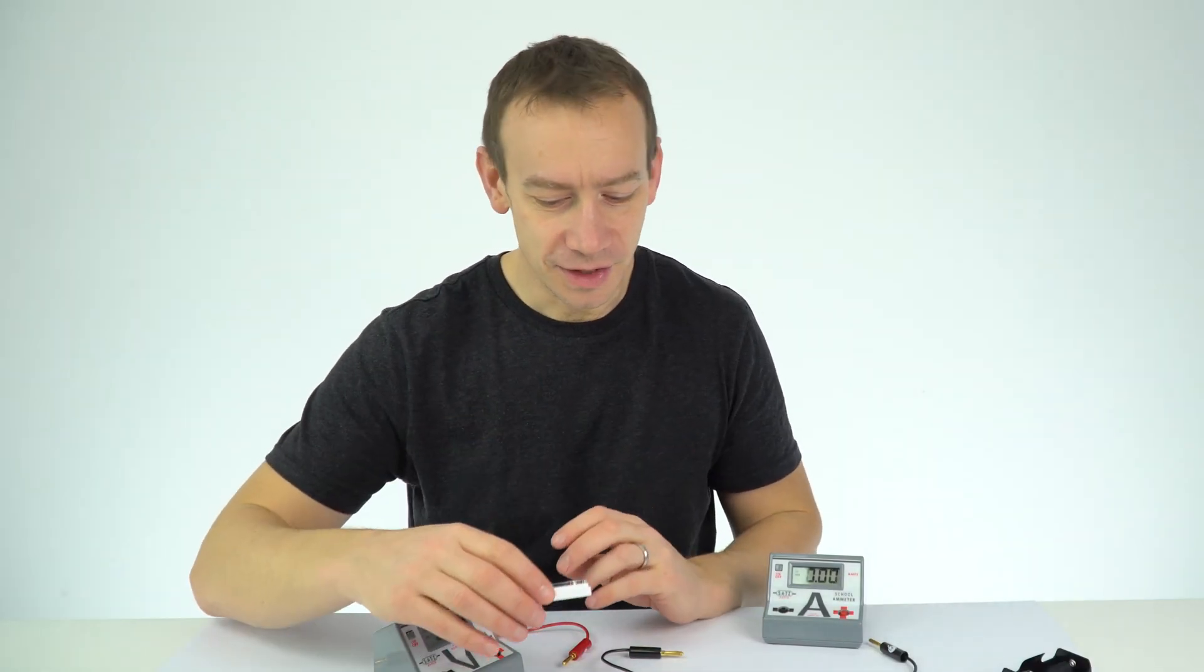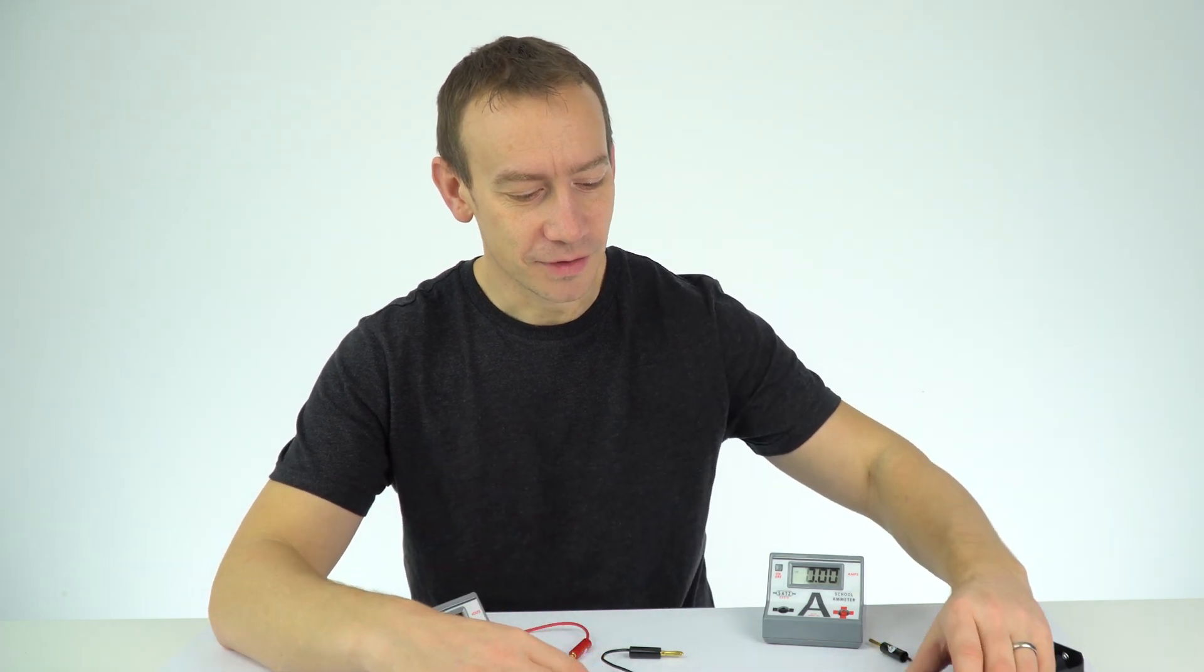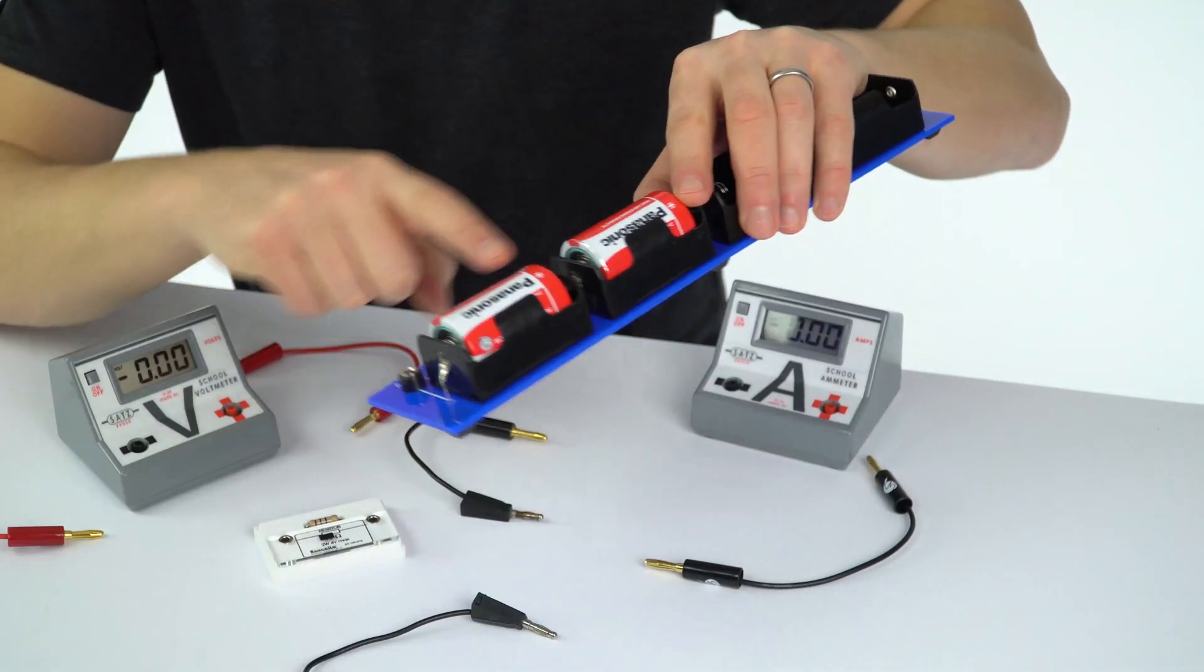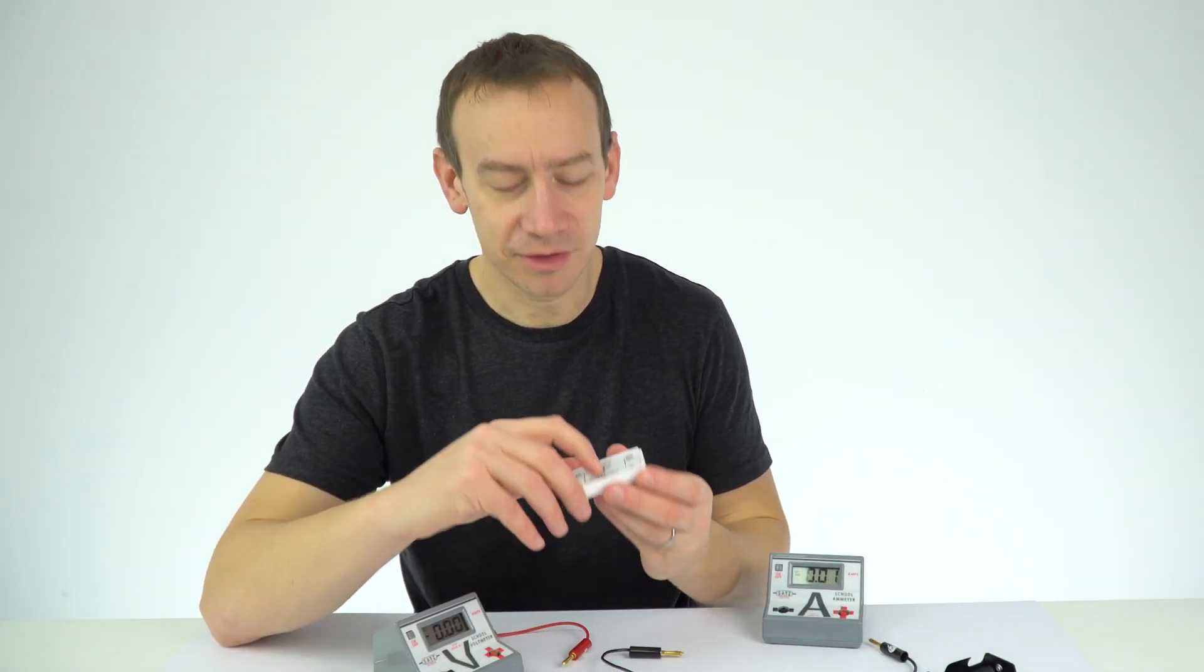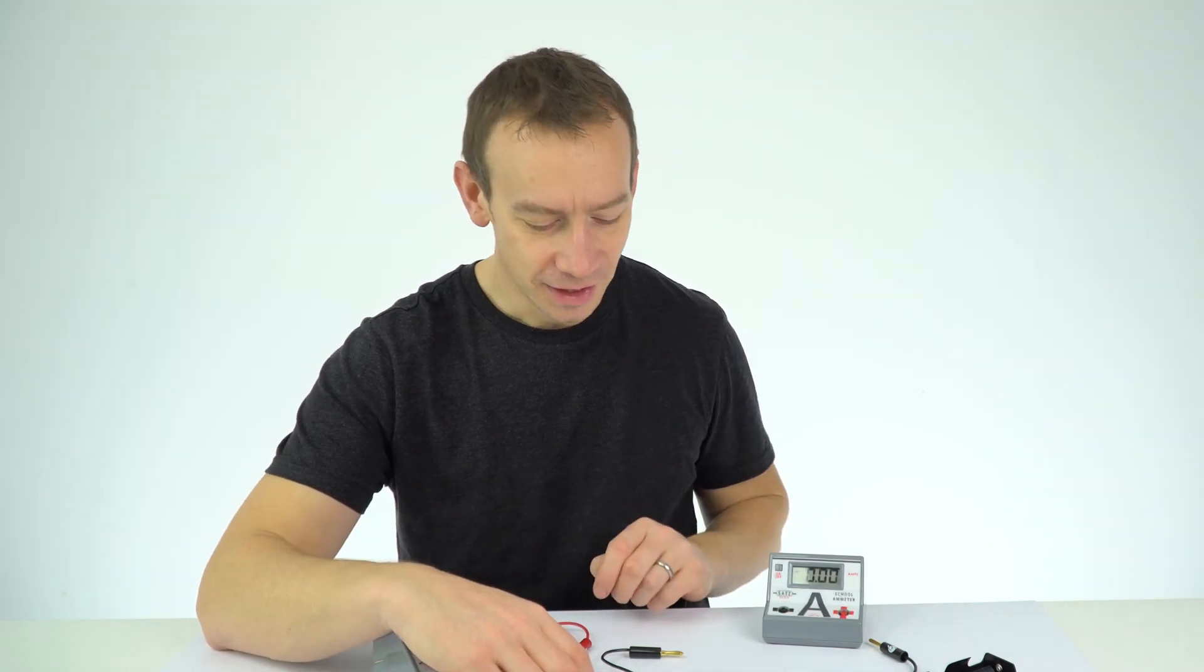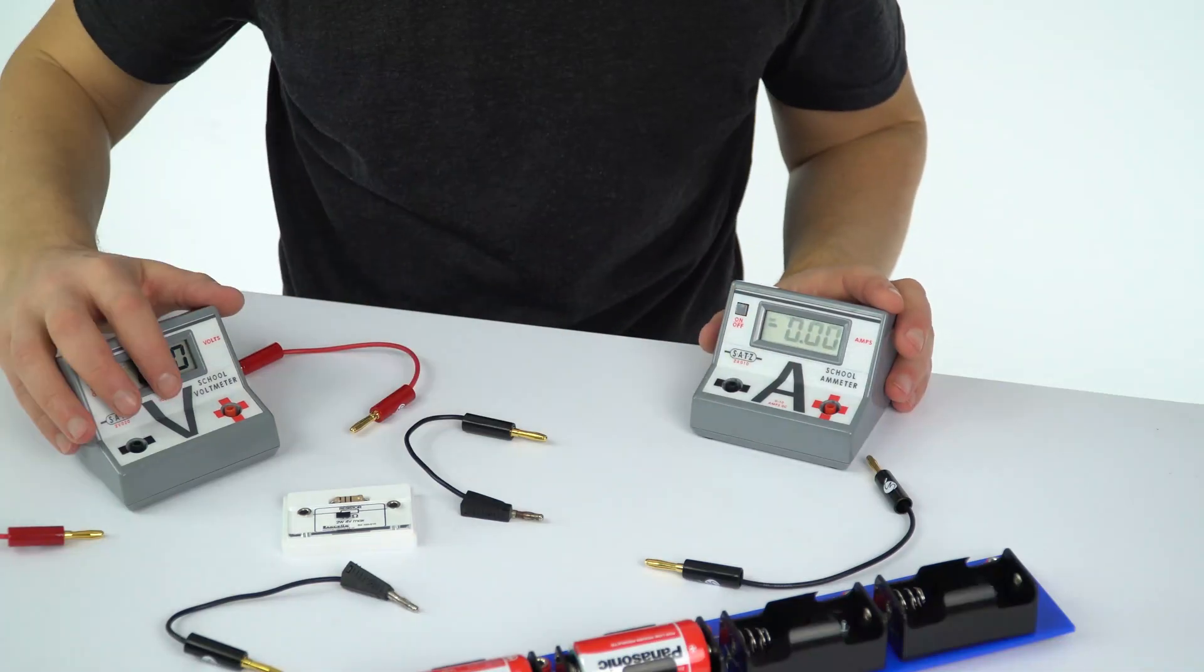Now the first thing we're going to do is connect it into a very simple circuit. I've got my cells here, I'm actually going to be using just two of them because it says on here a maximum of four volts, so I'm just going to use two of these. We've got an ammeter and a voltmeter.